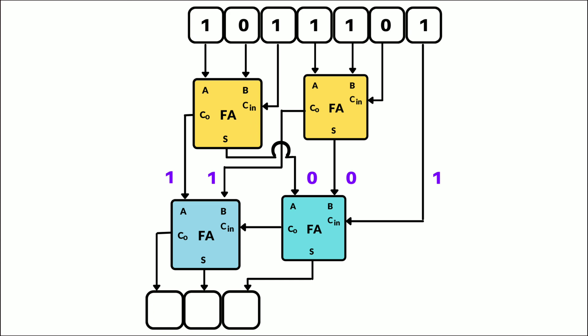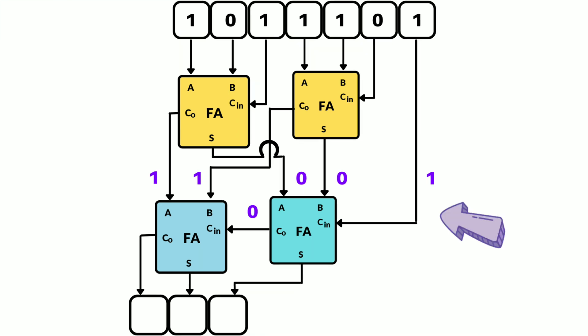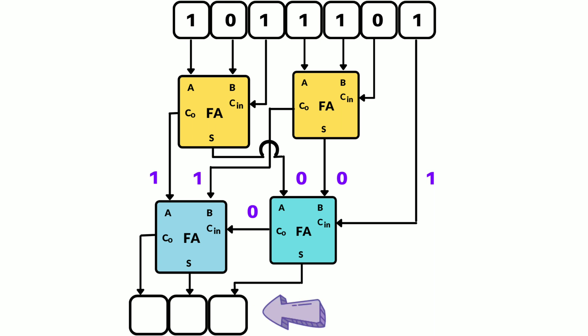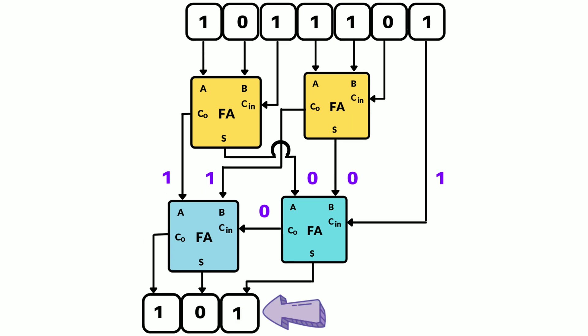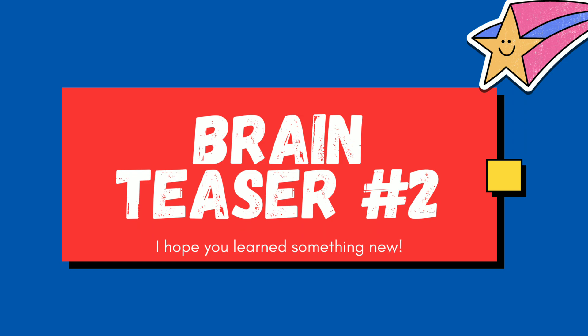The first-level outputs are given as inputs to the second level, with the LSB as carry in. The first full adder's carry out feeds into the second full adder. Collecting the three output bits — carry out, sum, and sum — gives us 1 0 1 in binary, which is five in decimal. You can try with other inputs to analyze the design.